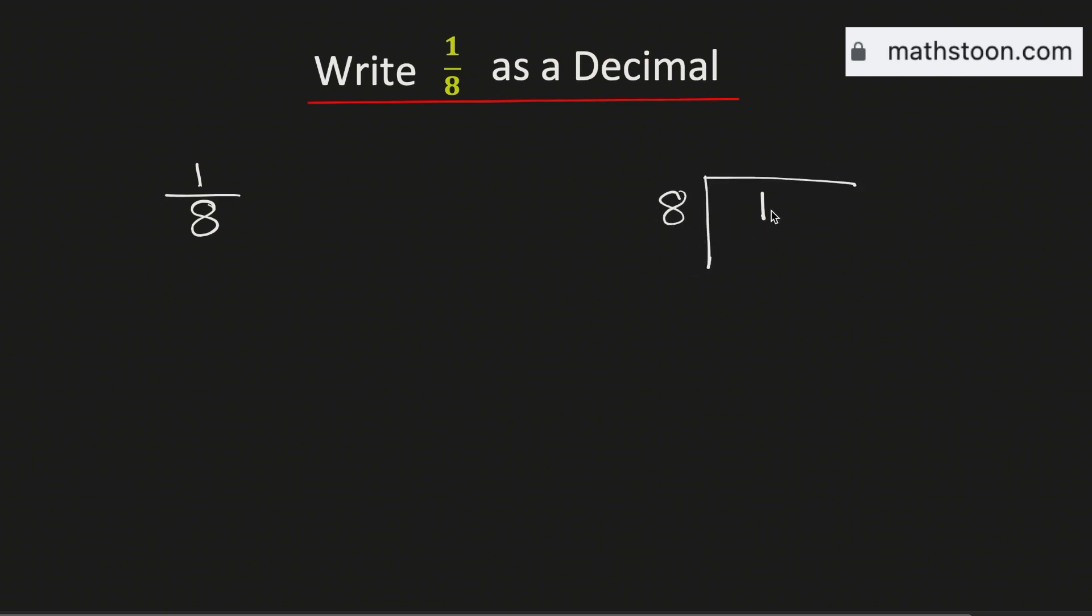We know that 8 cannot go into 1, that's why we need to put a decimal here so that we can get a 0.